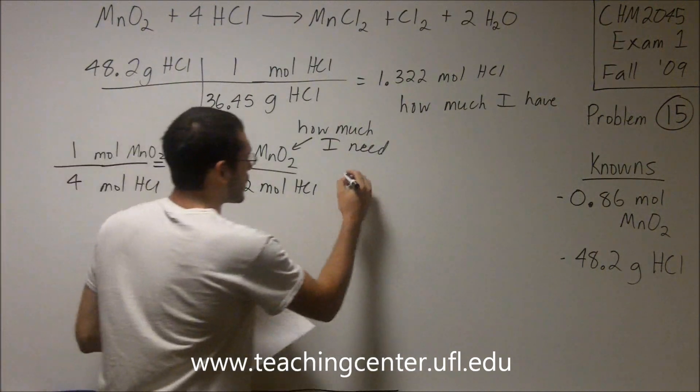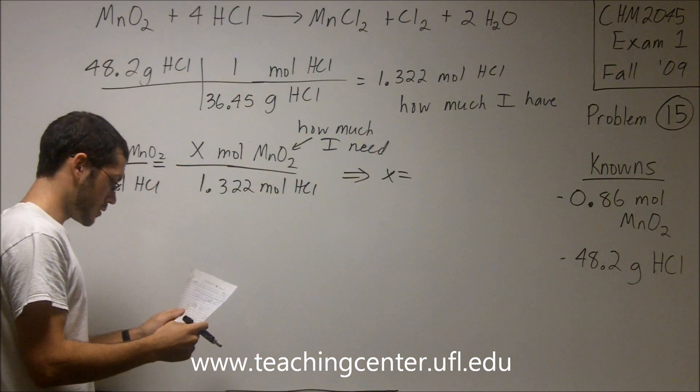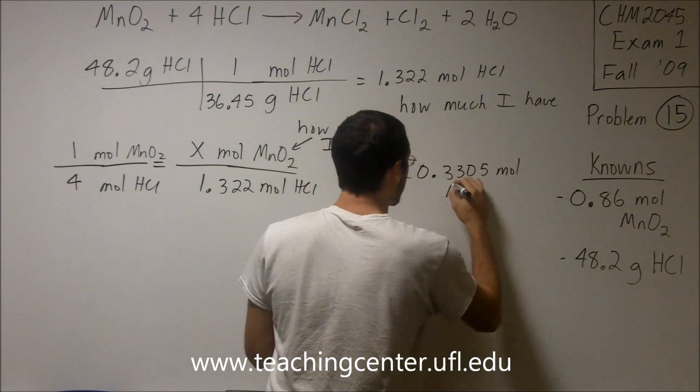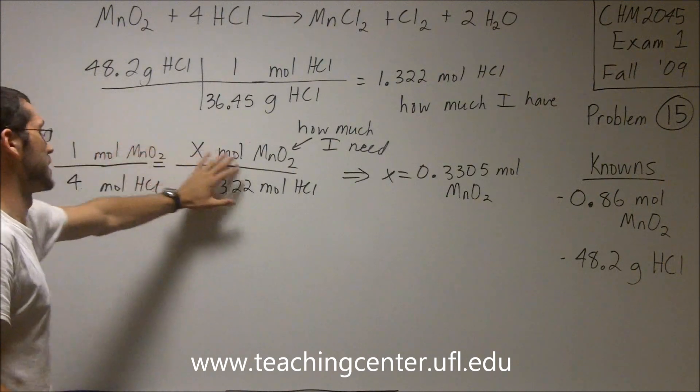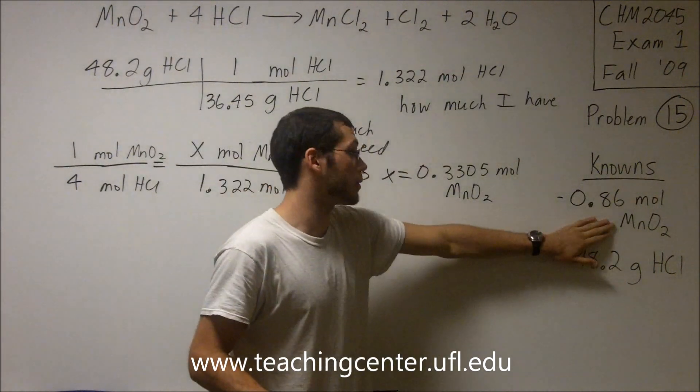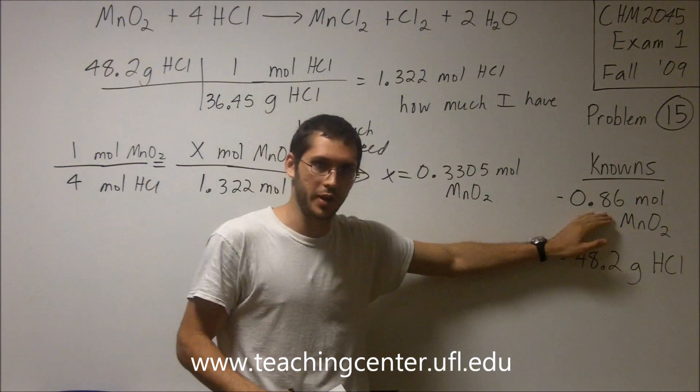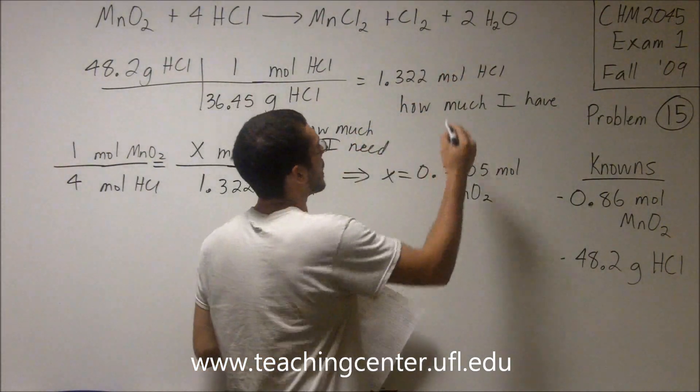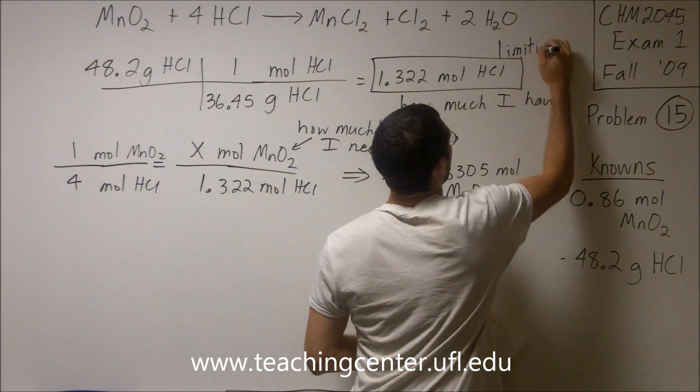So if you solve this little proportionality, then the amount of MnO2 that you would need turns out to be 0.3305 moles of MnO2 required to completely react away the amount of HCl that I have. That's what doing this was for. So now we ask ourselves, do I have this much? In fact, I do. This is how much MnO2 I have. This is how much MnO2 I need. I have plenty of MnO2, which means it's not going to run out. Therefore, HCl must run out first. It's going to be the limiting reagent.